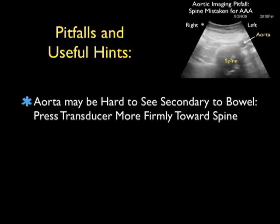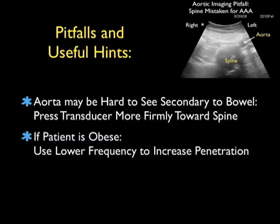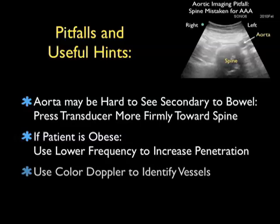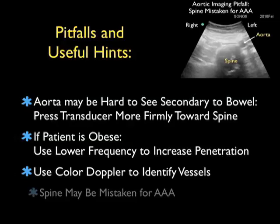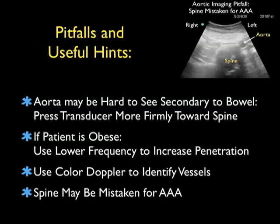Let's go over some pitfalls and useful hints for imaging of the abdominal aorta. The aorta may be difficult to see secondary to excess bowel gas — pressing the transducer more firmly towards the spine can displace bowel gas and improve visualization. If the patient has a high body mass index, use a lower frequency to increase penetration. Using color Doppler can help identify vessels, and be careful because the spine may sometimes look like a AAA — close attention to the spine location and vascular structures anteriorly will clear that up.